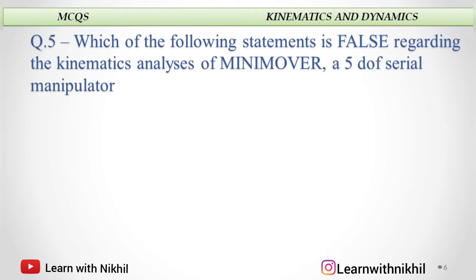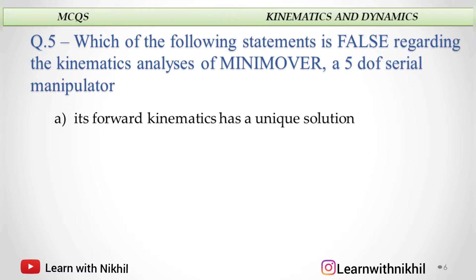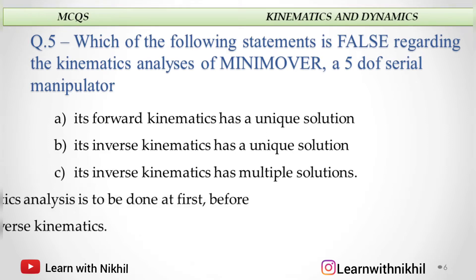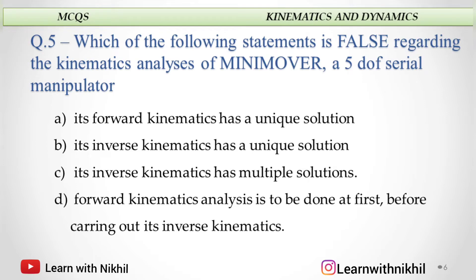Which of the following statements is false regarding the kinematic analysis of Minimover, a 5 degree of freedom robot? Minimover is a 5DOF robot. Its forward kinematics has a unique solution. Its inverse kinematics has a unique solution. Its inverse kinematics has multiple solutions, or forward kinematic analysis is to be done first before inverse kinematics. The false statement is that inverse kinematics has a unique solution — in fact, inverse kinematics has multiple solutions.